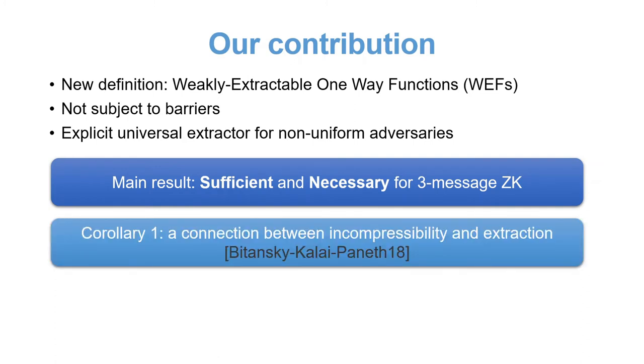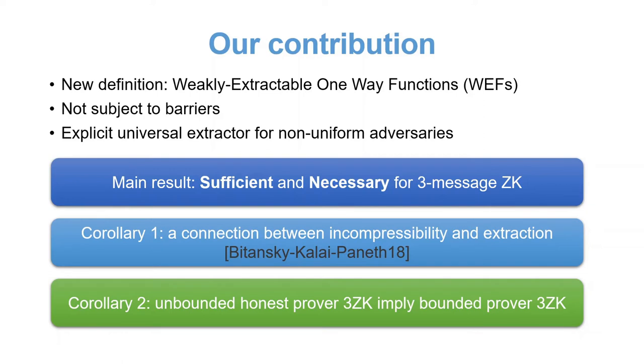We further draw two connections, one between incompressibility and extraction. BKP showed that three-message zero knowledge is implied by keyless hash functions that are impossible to compress collisions. Our results show that the same notion implies a certain non-interactive extractability. Second, as a byproduct of our proof, we show that unbounded honest prover three-message zero knowledge implies bounded prover three-message zero knowledge.